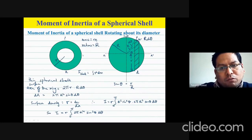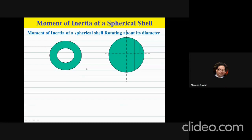Now let's calculate the moment of inertia of a spherical shell. A spherical shell is empty from inside — it has some thickness, but it is hollow. If you consider a small mass element of certain thickness, when viewed from the front it looks like a ring because inside it is hollow.